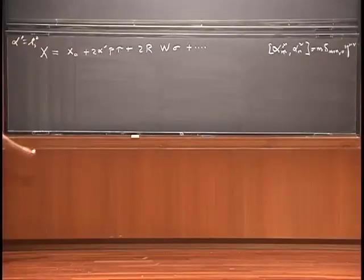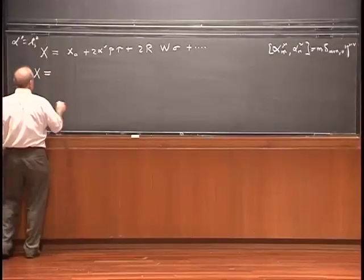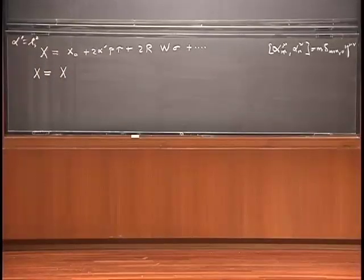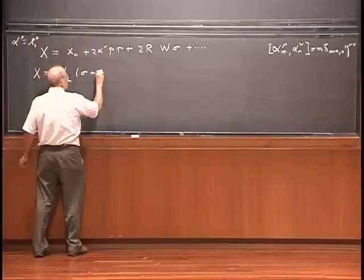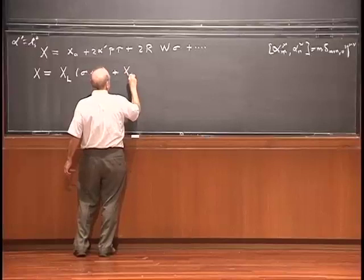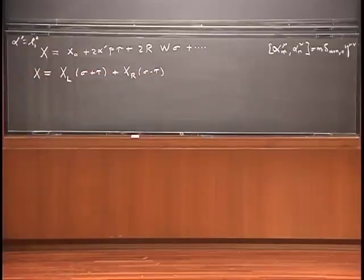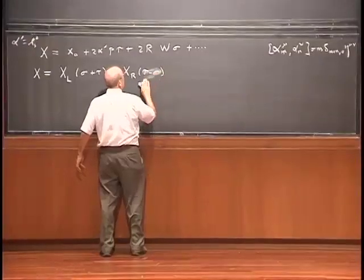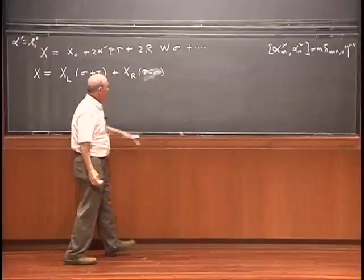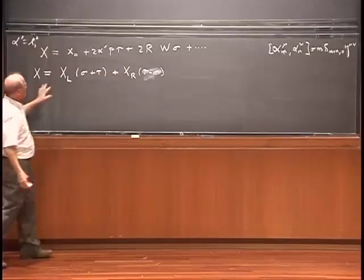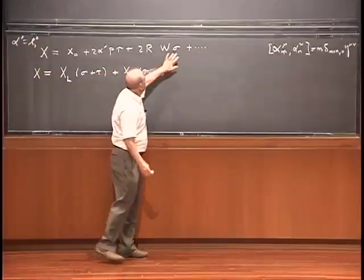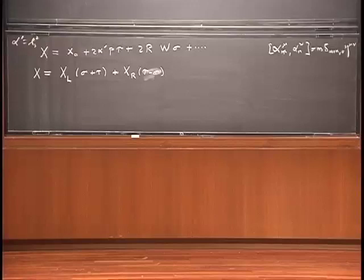There's a basic fact about the two-dimensional wave equation: the general solution is a sum of two arbitrary functions of one variable, referred to as left-movers and right-movers. There's a function of sigma plus tau, and another function of tau minus sigma. These describe excitations moving in one direction or the other along the string.